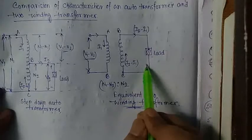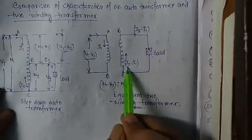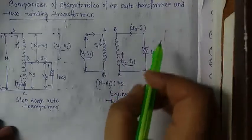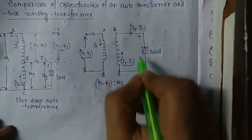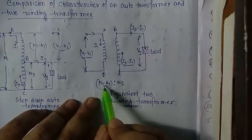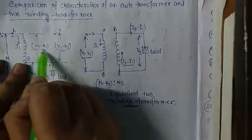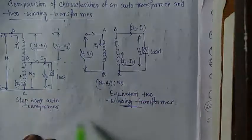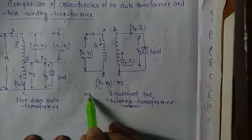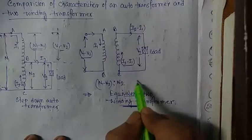In the secondary side the current flow is I2 minus I1, and the voltage across the load is V2. The turn ratio is N1 minus N2 to N2. So this step down autotransformer can be drawn as an equivalent two winding transformer, as shown in figure number 2.